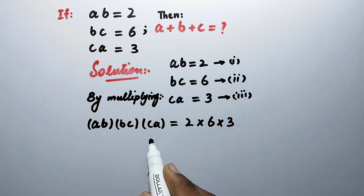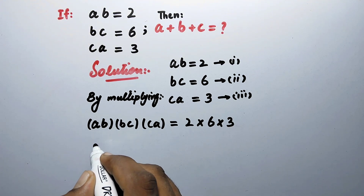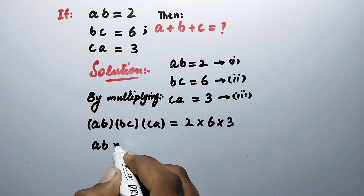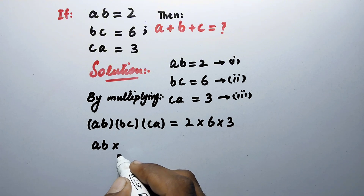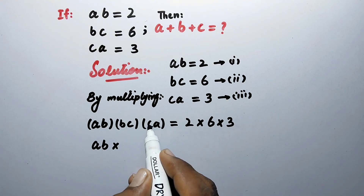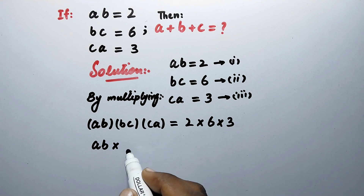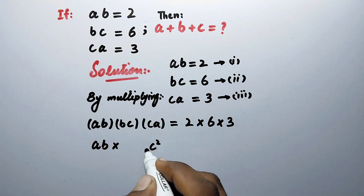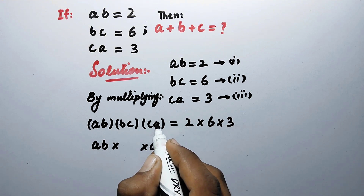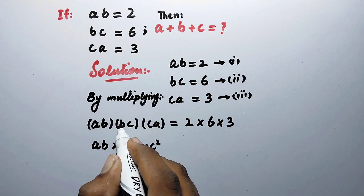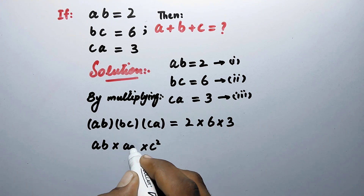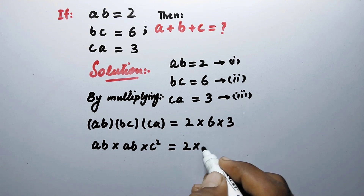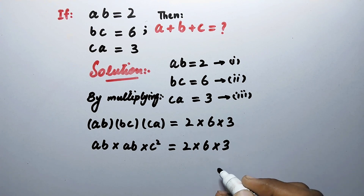Now we can write the left-hand side in this way: a times b, multiplied by — we will multiply this c to this c so here it will be c squared, and here left is a and here left is b — so here it will be a·b·c² equal to 2 times 6 times 3.